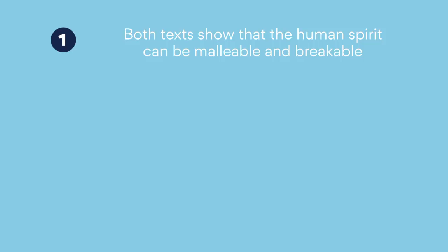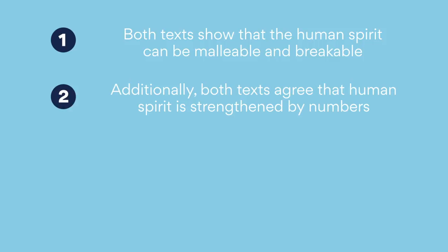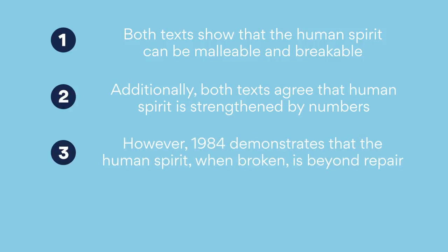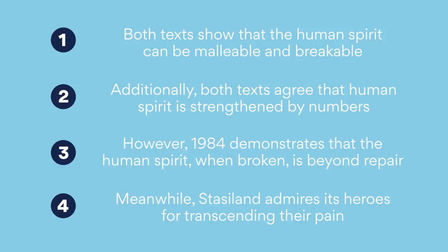Now let's get into some possible paragraphs. One: both texts show that the human spirit can be malleable and breakable. Two: additionally, both texts agree that human spirit is strengthened by numbers. Three: however, 1984 demonstrates that the human spirit, when broken, is beyond repair. Four: meanwhile, Stasieland admires its heroes for transcending their pain. Remember that the key message here is that even though the texts do share similar components, they might not agree on everything.